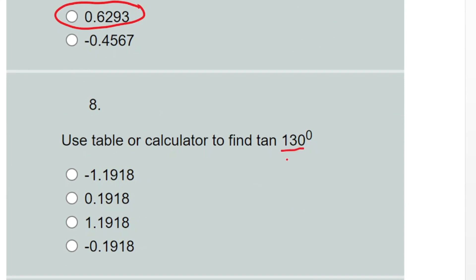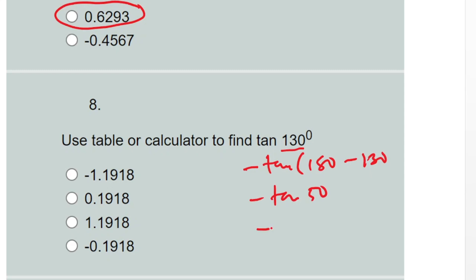Question eight: tan 130 degrees. 130 falls in the second quadrant, and tangent is negative there. So the answer is minus tan(180° − 130°), which is minus tan 50°. Checking tan 50 on the calculator gives 1.1918, so the answer is minus 1.1918.